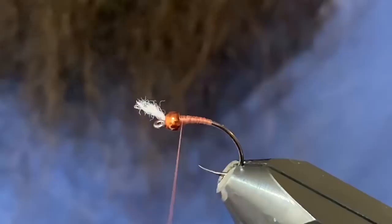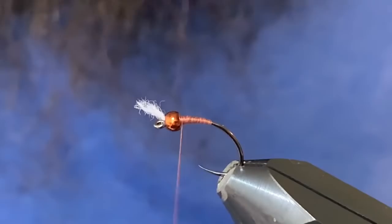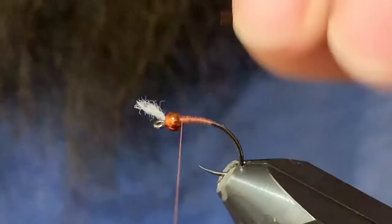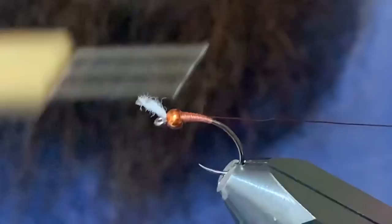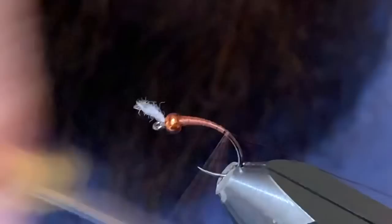Next material we're going to tie in is some small size copper brown UTC wire. I'll just grab that and work my way down into the bend here, come down a little ways. That looks pretty good there.